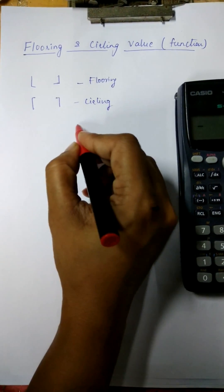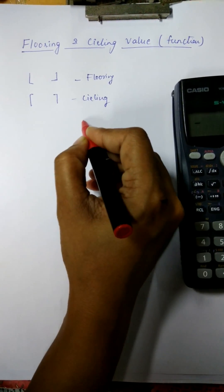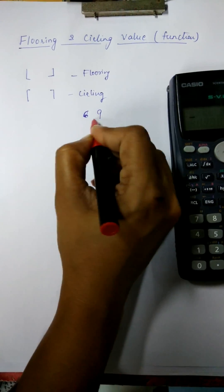For example, we remove flooring and ceiling values and put a fraction value, like we have 9 by 6.